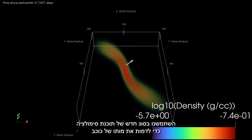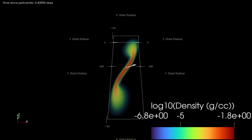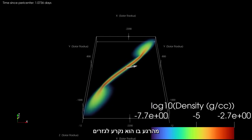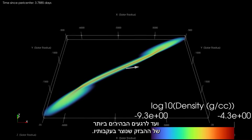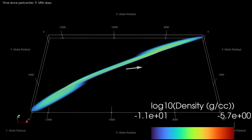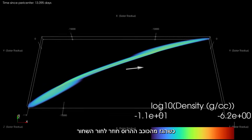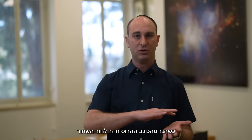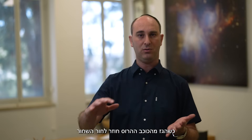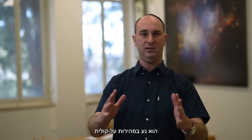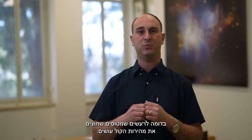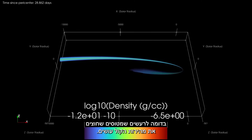We used a new type of simulation code to model the death of the star, from the moment it was ripped apart, up to the brightest moments in the resulting flare. As the gas from the disrupted star returns to the black hole, it moves supersonically and generates shock waves like sonic booms produced by airplanes crossing the sound barrier.